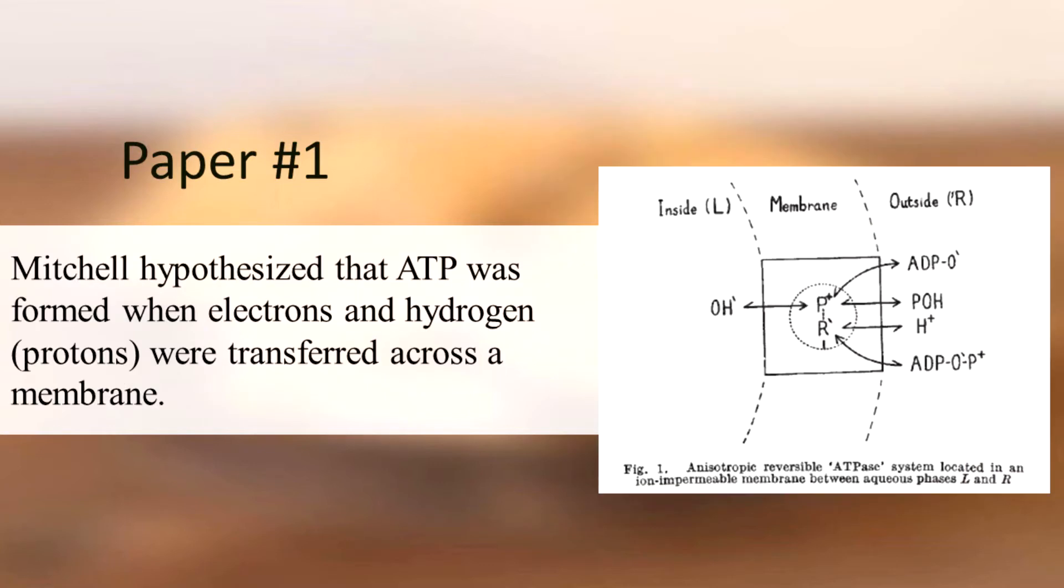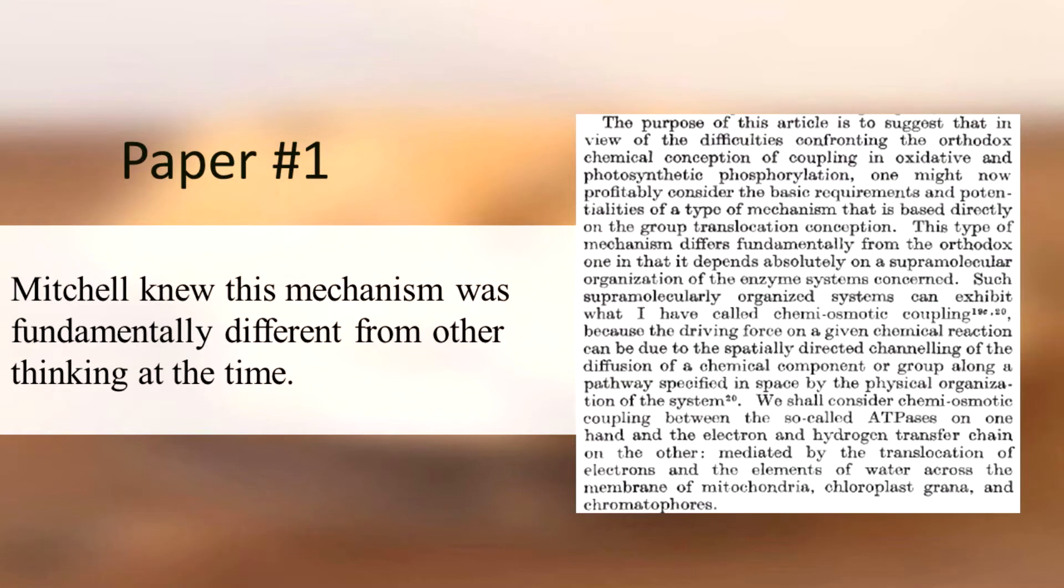He hypothesized that ATP was synthesized when electrons and hydrogen ions, or protons, were transferred across a membrane. Mitchell knew that his mechanism was fundamentally very different from the thinking of the majority of scientists at the time.